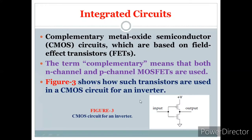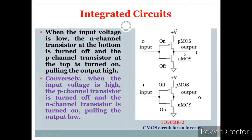In a simple CMOS inverter circuit, the gates are connected together, the output is at the drain junction, one transistor connects to the power supply and the other to ground. When the input is zero, PMOS turns on and NMOS is off, so the output is pulled high to VCC. When the input is one, PMOS is off and NMOS turns on, pulling the output low to ground. This demonstrates the inverting functionality of the CMOS inverter.